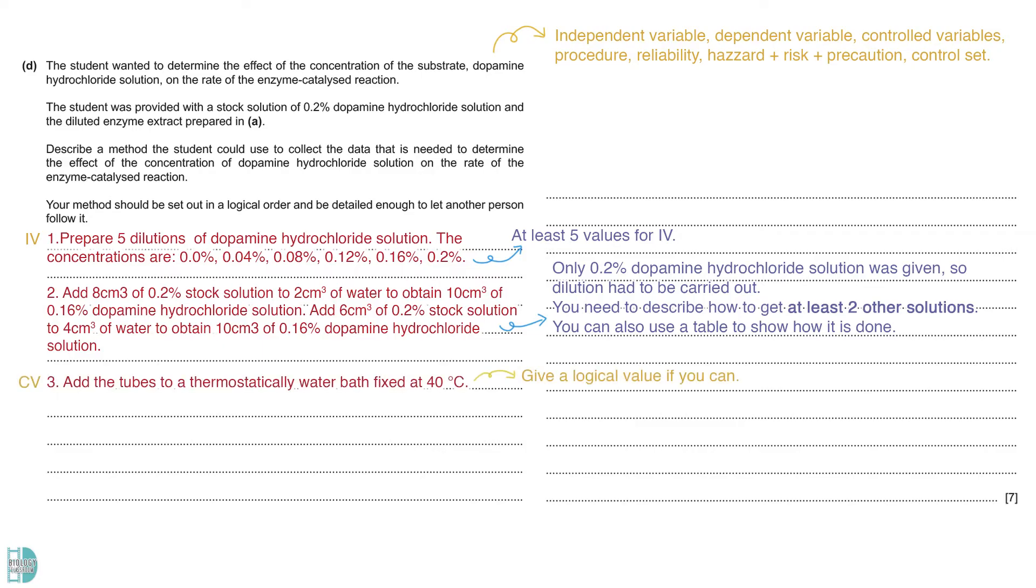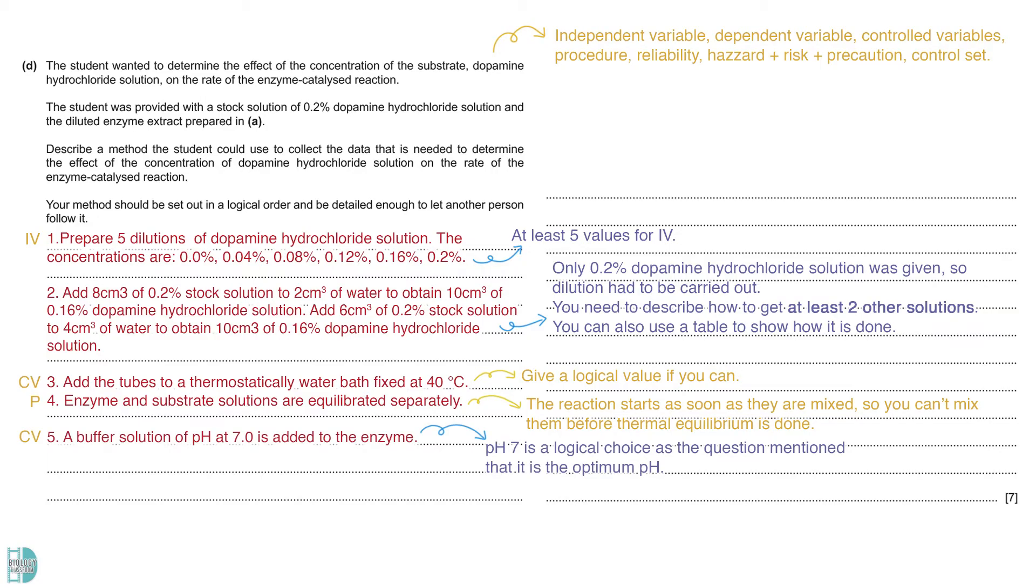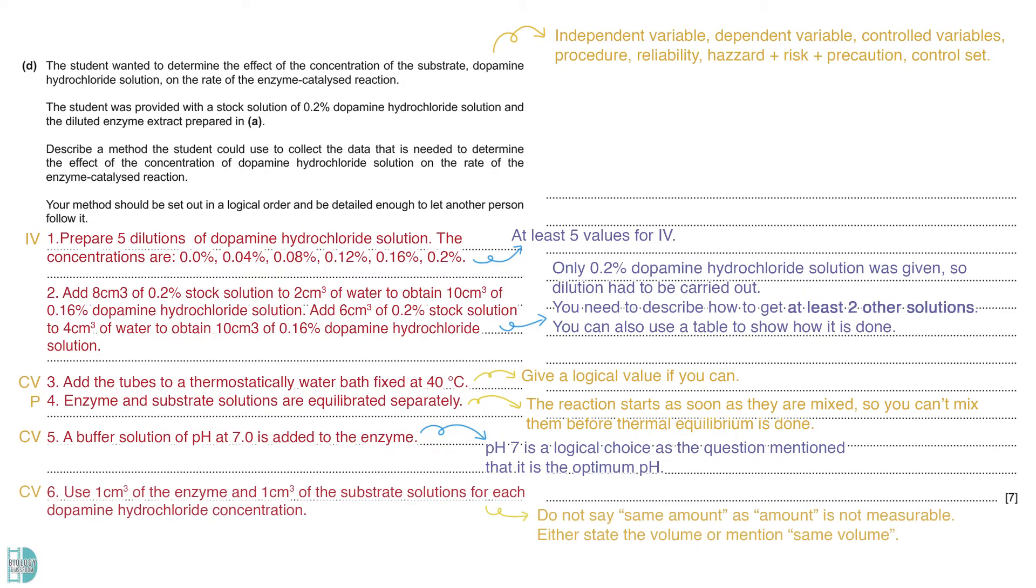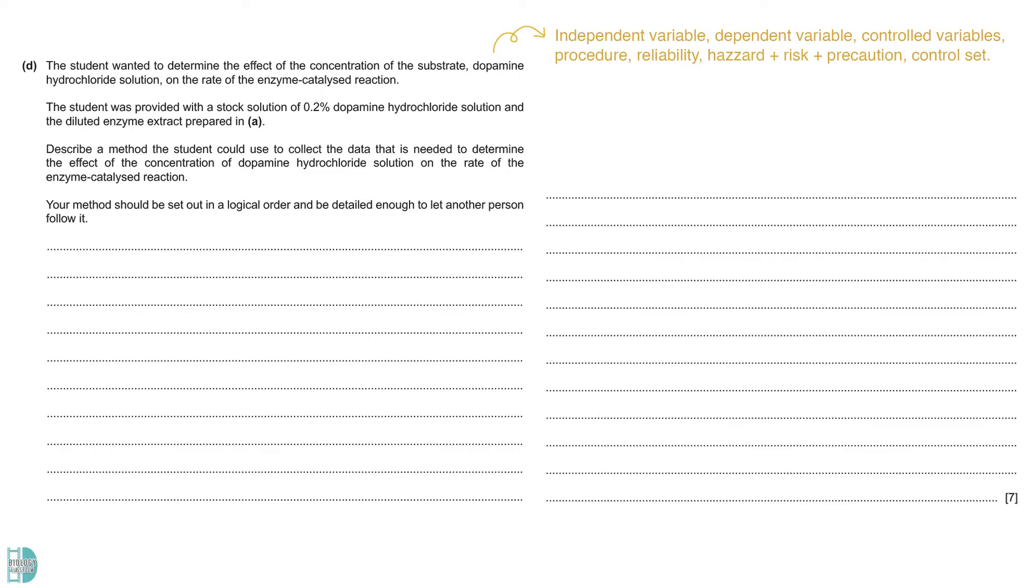Then, we need to add the tubes to a water bath at a fixed temperature. State the temperature if you have a logical value in mind. The enzyme and substrate solutions are equilibrated separately. Note that the reaction starts as soon as they are mixed, so you can't mix them before thermal equilibrium is done. A buffer solution is added to the enzyme to standardize the pH for the reactions. The previous question mentioned that the optimum pH is 7, so this is a logical choice. Then, state the volume of enzyme and substrate solution being added. They are controlled variables too. Do not use the word amount, as it is not a measurable word.